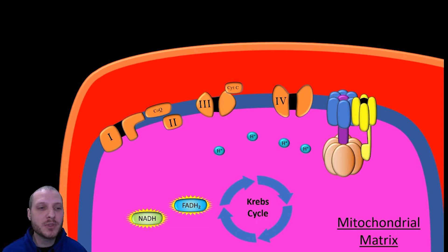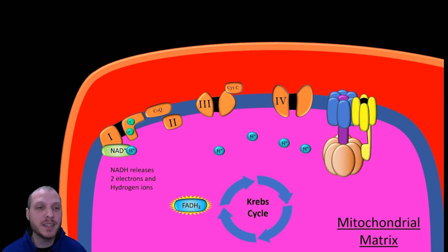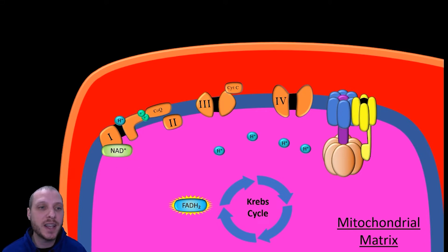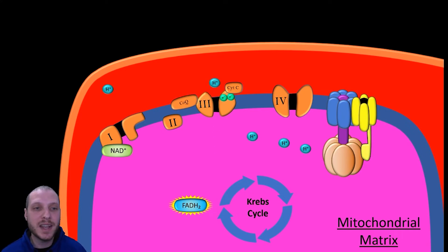Now that we've introduced all the players, let's run through the process. The first step involves the high-energy NADH molecule interacting at Complex I. We take away a hydrogen atom from NADH as well as two negatively charged electrons. As these negatively charged electrons pass through Complex I, we utilize that negative charge to draw hydrogen ions from the mitochondrial matrix into the intermembrane space. From there, we transport the electrons to Complex III, where again we use that negative charge to bring another hydrogen ion through.